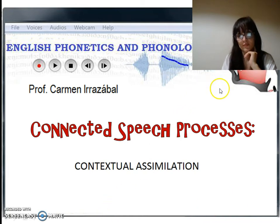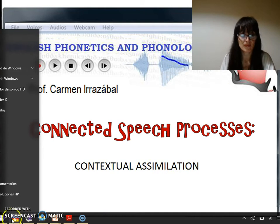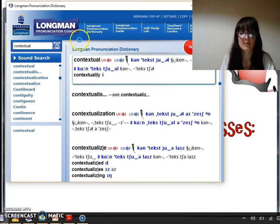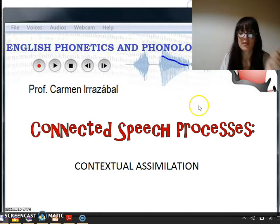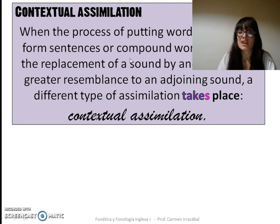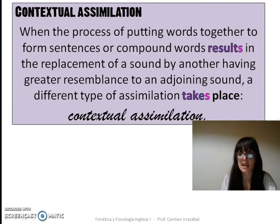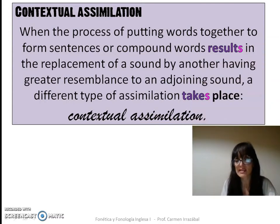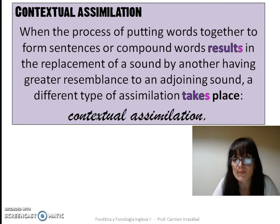Contextual Assimilation. When the process of putting words together to form sentences or compound words results in the replacement of a sound by another having greater resemblance to an adjoining sound, a type of assimilation known as contextual takes place.